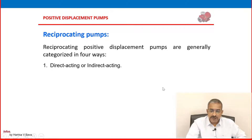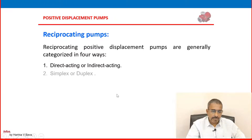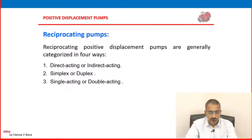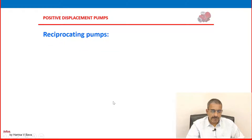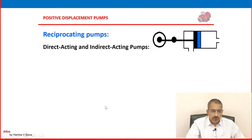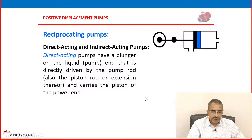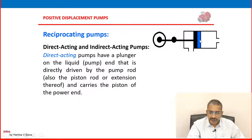Reciprocating positive displacement pumps are generally categorized in four ways: direct acting or indirect acting, simplex or duplex, single acting or double acting, and power pumps. Power pumps are not commonly used, so we will discuss the other three. In direct acting pumps, the pump has a plunger on the liquid end that is directly driven by the pump rod — the piston rod extension — and directly carries the piston at the power end.